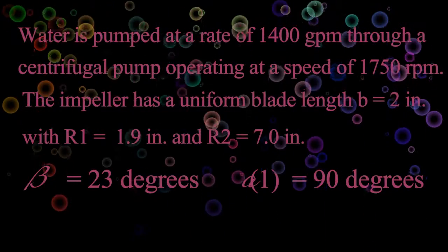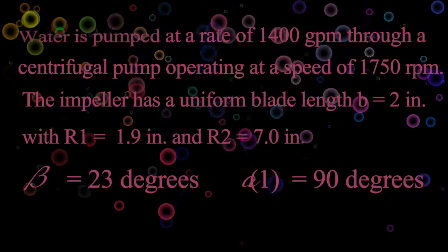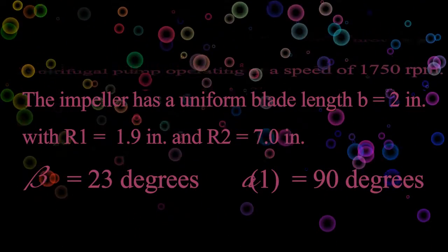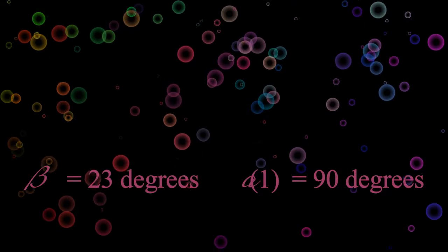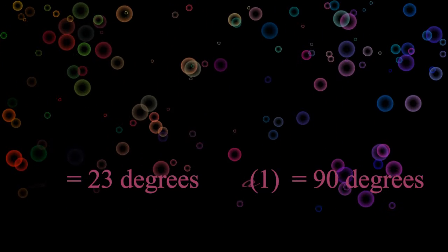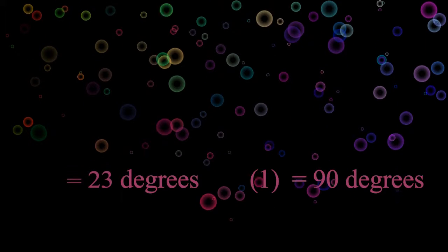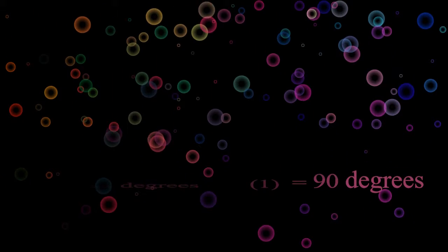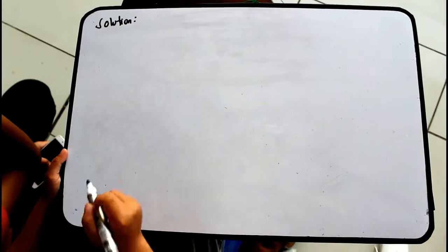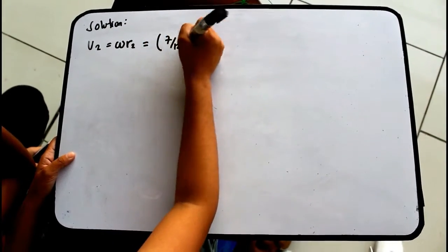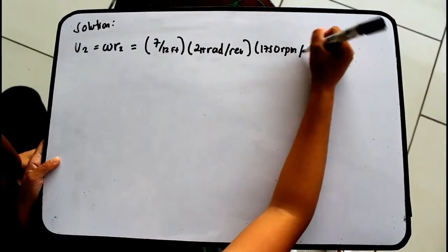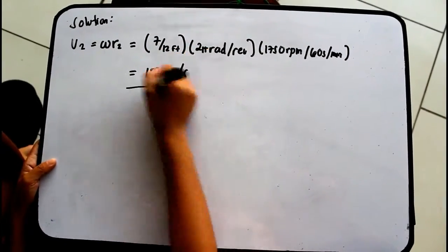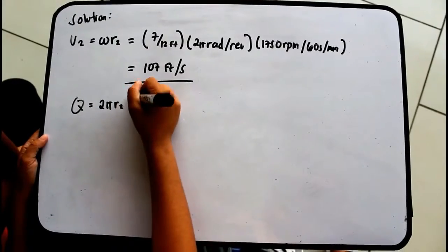We are to determine: the tangential velocity component V-theta-2 at the exit, the ideal head rise Hi, and the power W-shaft transferred to the fluid. For the solution, U2 equals omega times r2, which is 7/12 feet times 2 pi rad/rev times 1750 RPM over 60 s/min, which equals 107 feet per second.